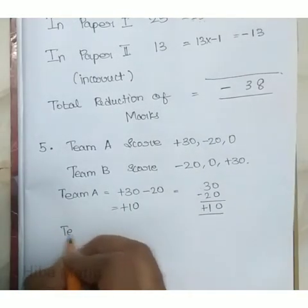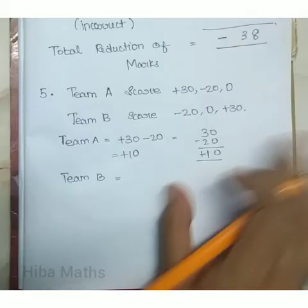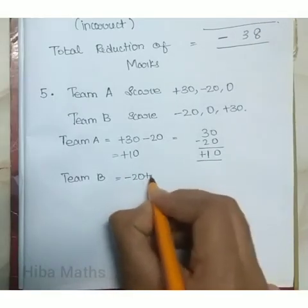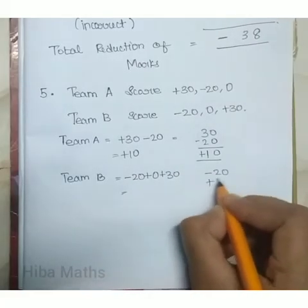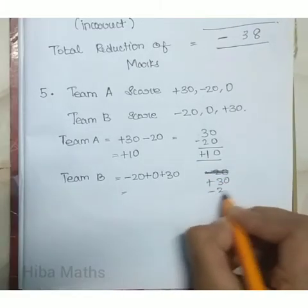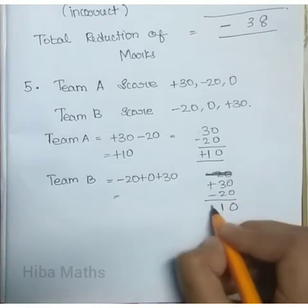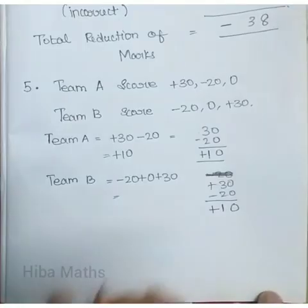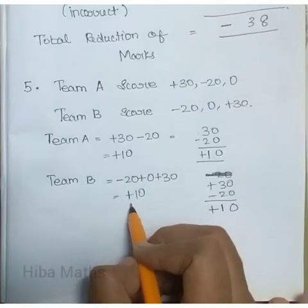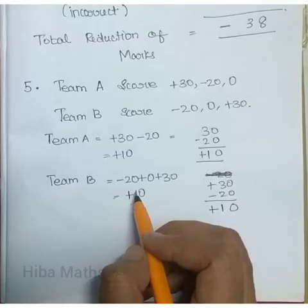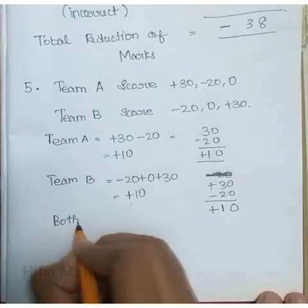Which team will win? Team A: plus 30 minus 20 equals plus 10. Team B: minus 20 plus 0 plus 30 equals plus 10.